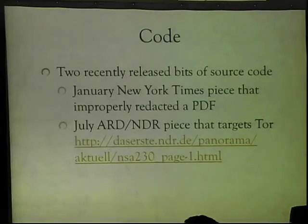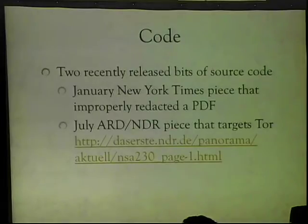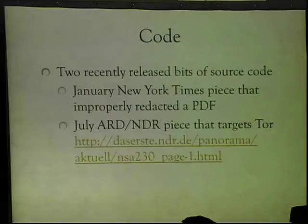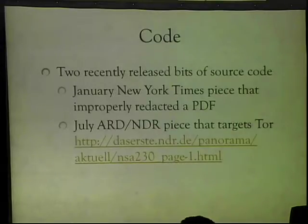Code was released recently. Back in January, a code snippet was released by the New York Times — they didn't mean to, but they did accidentally. They did the typical thing of putting a black box in a PDF over the text, but the text is still there, so use copy and paste. Then just a few weeks ago, more code was released related to how this system is being used to spy on Tor.